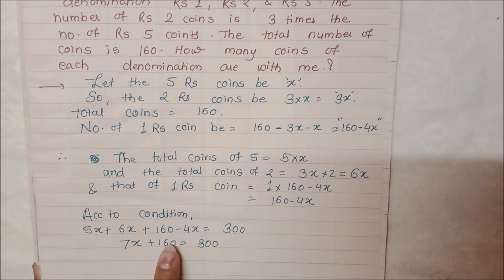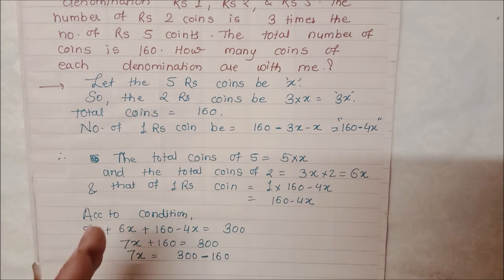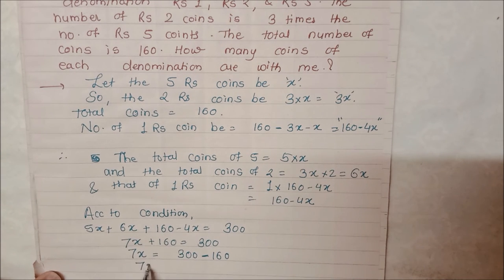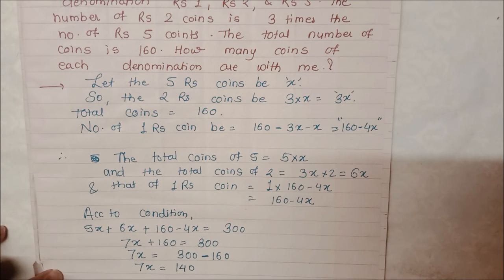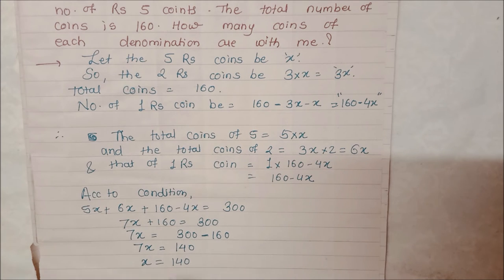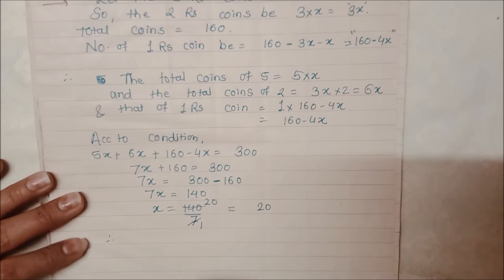Ab kya karenge? Variable wali term ko yahin rehne denge, constant term ko opposite side le jayenge, kyunki hamen x ki value nikalni hai. To hum 7x ko apni jagah hi rakhte hain. 160 idhar plus mein tha, udhar jayega to minus ho jayega. Yaad rakhna: jo bhi number opposite side jata hai, plus minus hota hai, minus plus hota hai, multiply divide hota hai, divide multiply hota hai. To 7x = 300 minus 160 = 140. Ab 7 ko divide karenge: 140 divided by 7 = 20. Therefore, x is equal to 20.